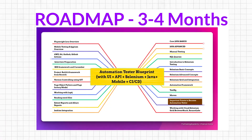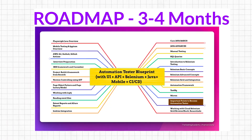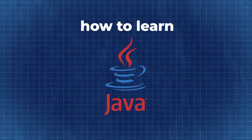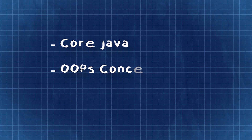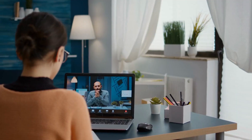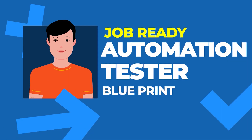Apart from the roadmap, I'm going to give you clarity on the topics — specifically how to learn Java. The different topics in Java include Core Java, OOP concepts, and the Collections Framework. I've provided all the links here for all the topics we are going to cover in the job-ready automation program.